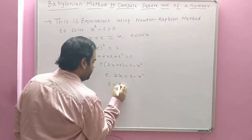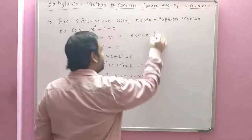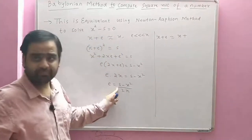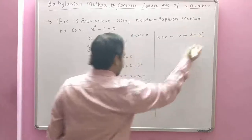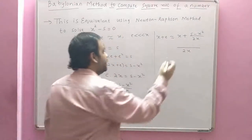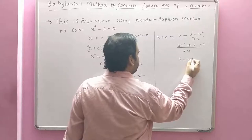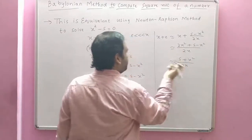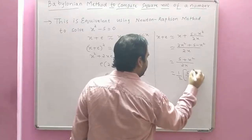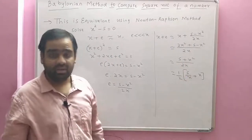Since e is much less than x, 2x + e ≈ 2x, so e·2x = s − x², giving e = (s − x²) / 2x. The next term x + e is approximately x + (s − x²) / 2x. Taking 2x as the common denominator gives (2x² + s − x²) / 2x = (s + x²) / 2x, which simplifies to (1/2)(s/x + x). This is the recurrence formula for the next term.